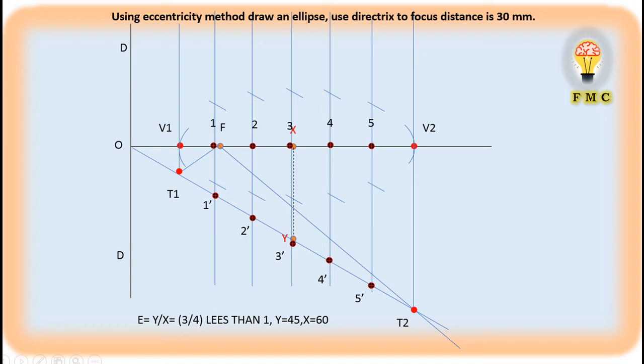For the initial condition, just measure V1 to T1 and put it in the focus — it will cut. Similarly here also — nothing to worry. Now connect this line and you will get the ellipse curve.